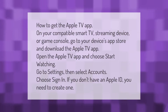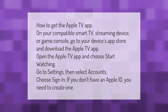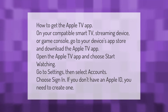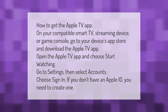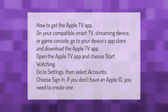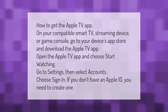To get the Apple TV app on your compatible smart TV, streaming device, or game console, go to your device's app store and download the Apple TV app. Open the Apple TV app and choose Start Watching. Go to Settings, then select Accounts and choose Sign In. If you don't have an Apple ID, you'll need to create one.